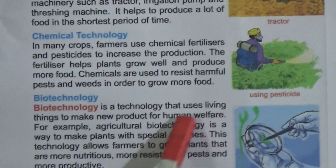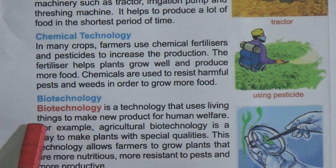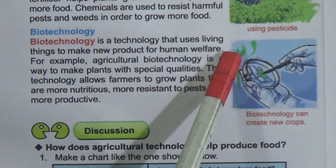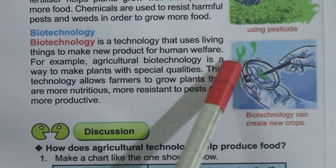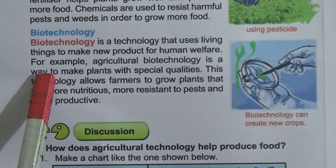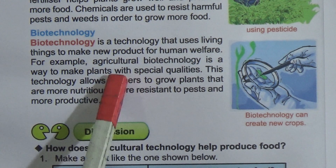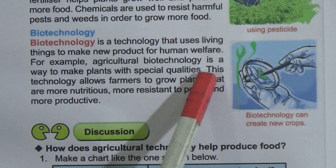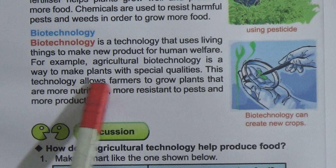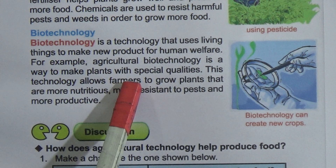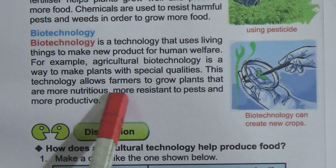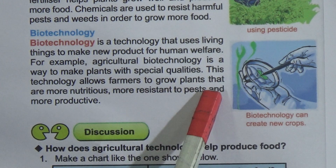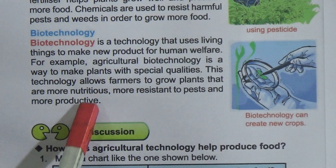Now come to biotechnology. Biotechnology is the technology that uses living things to make new products for human welfare. For example, agricultural biotechnology is a way to make plants with special qualities. This technology allows farmers to grow plants that are more nutritious, more resistant to pests, and more productive.